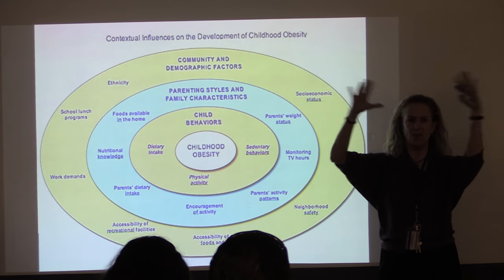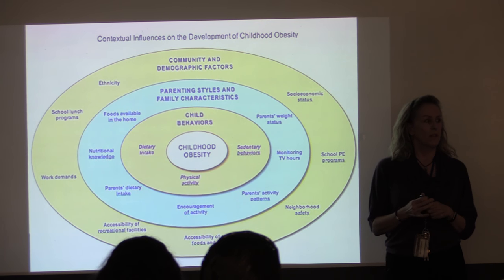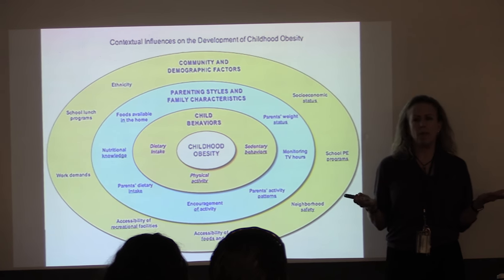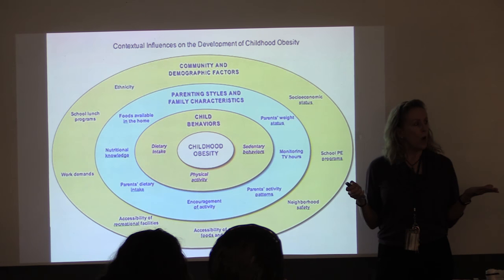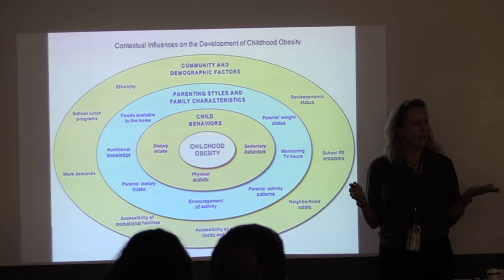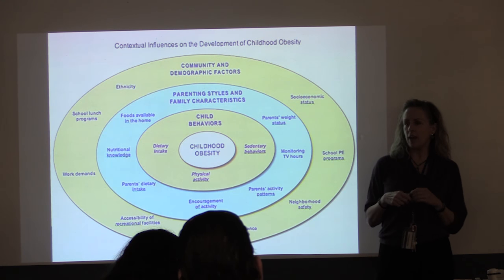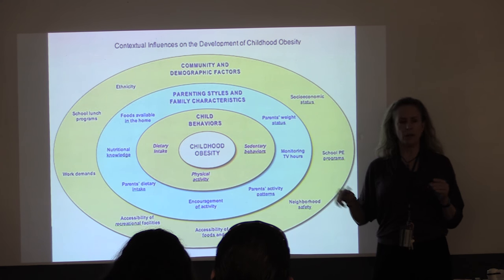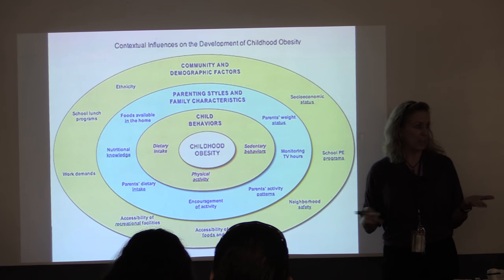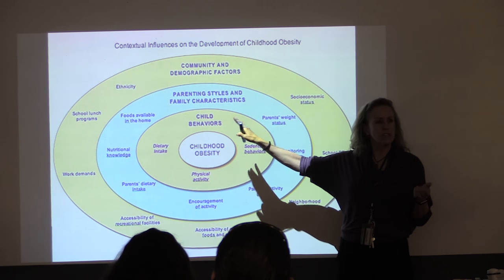We should also think about school lunch programs and the Department of Agriculture, which funds them. We spend roughly 99 cents per lunch per child — very low, not nearly enough for high-quality food. School lunch programs consider the sauce on pizza to be a vegetable, and ketchup as a vegetable — which is probably not really a vegetable. So how school lunches are funded has a direct influence on this individual child.